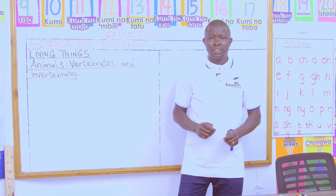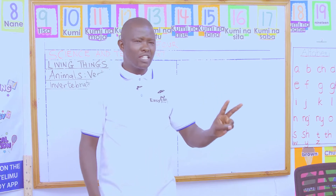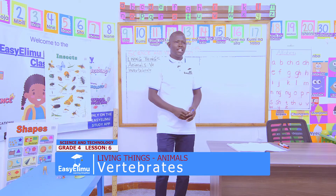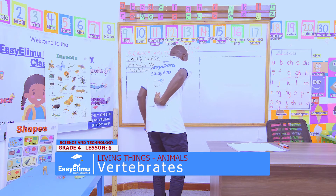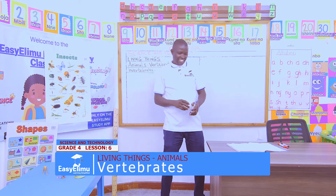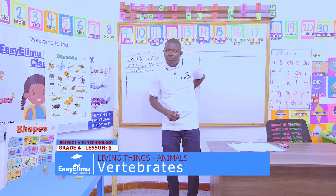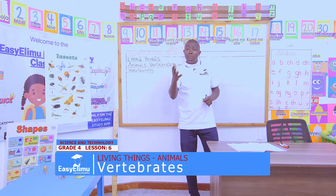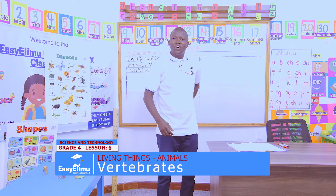Some animals are big while others are small — that is one difference. For another difference, just in pairs, touch the center of the back of your friend. What can you feel at the center of the back of your partner? Jane said she can feel some bones running up from the neck downwards. That is the correct answer. Animals with that bone we call vertebrates, because this bone is called backbone.